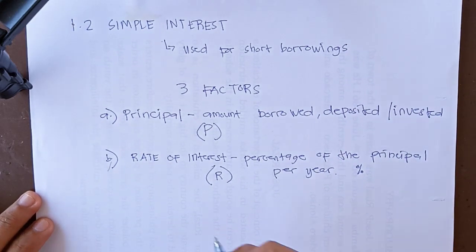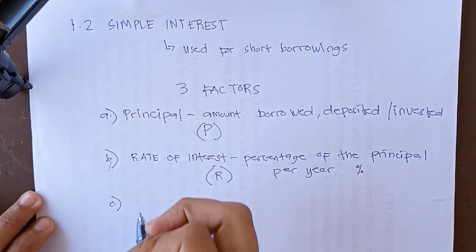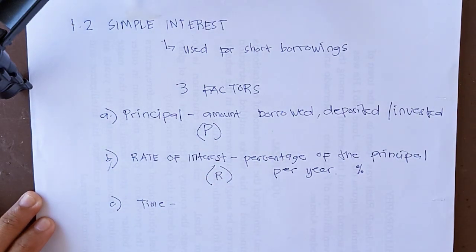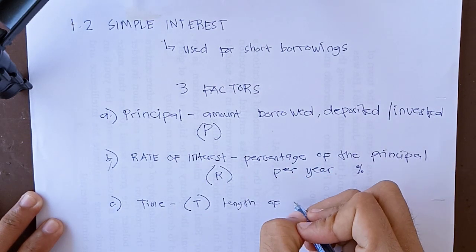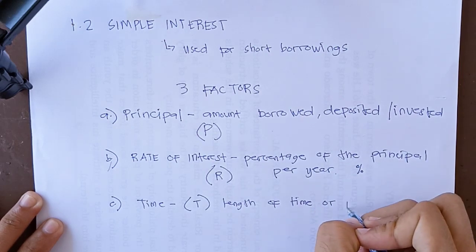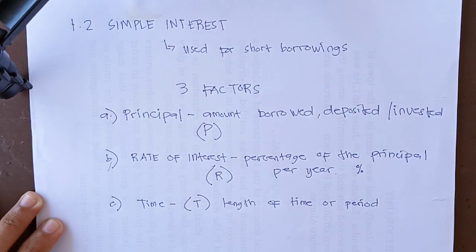And the last factor we have the time. Time is represented by capital T, and this refers to the length of time or period from the date the loan is made to the date the loan becomes due or payable. The time is usually calculated on a per year basis.